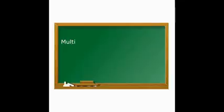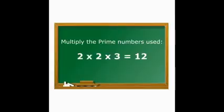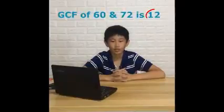This time, let's check if there's still a need to simplify 5 and 6. If there's none, then we are ready to identify the GCF. Now, we multiply the prime numbers used to divide the given numbers. We multiply 2 and 2 and 3, which is 12. Therefore, our GCF is 12.